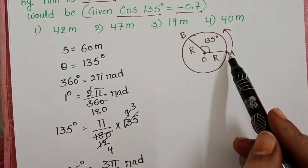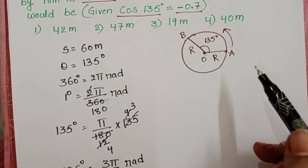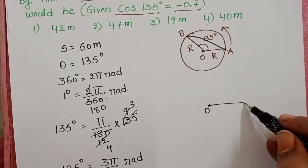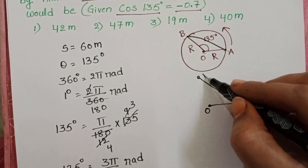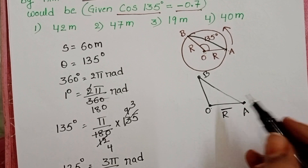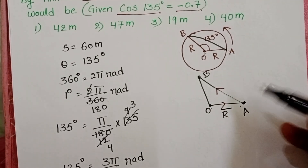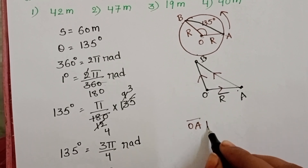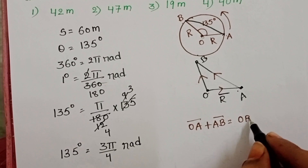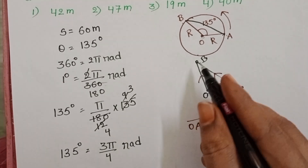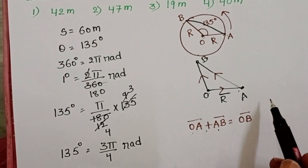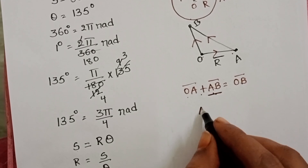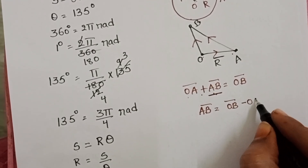Now we find the displacement between A and B — the shortest distance. Drawing the diagram: O is the center, A and B are points on the circle. Taking vectors OA and AB, by the triangular law of vector addition: OA + AB = OB. Since we want AB, rearranging gives AB = OB − OA.